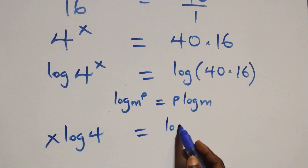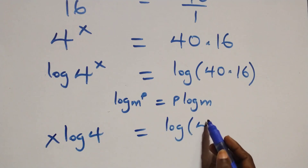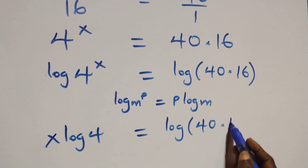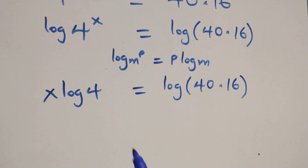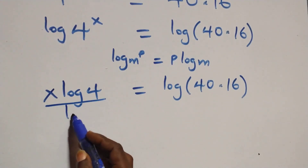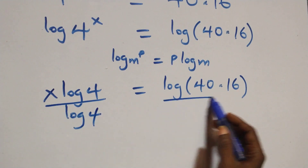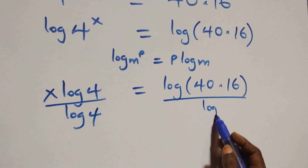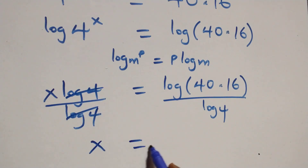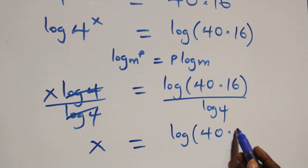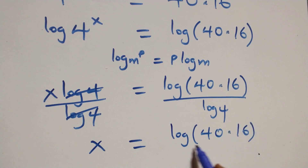Applying the power log rule and dividing both sides by log 4, log 4 cancels on the left side, and we have x equals to log(40 times 16) over log 4.